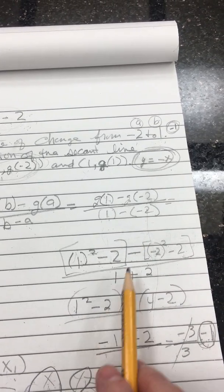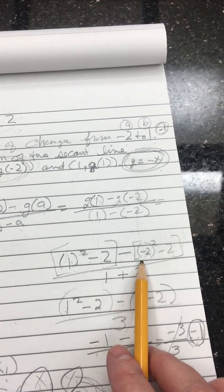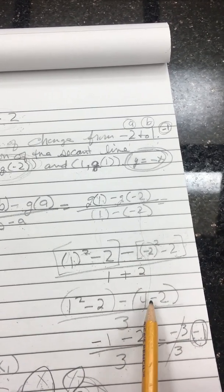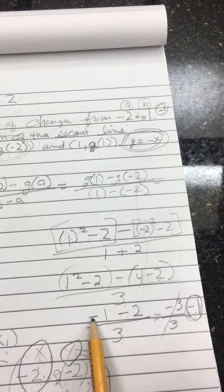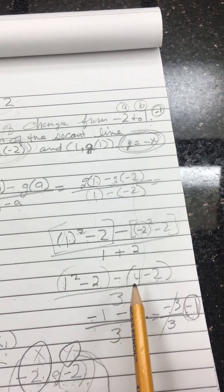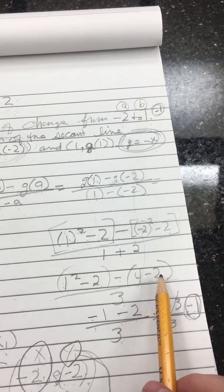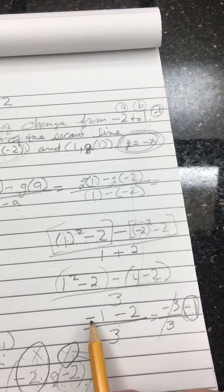So you end up with 1 squared minus 2, bring down your minus sign. A negative 2 squared is a positive 4 minus 2. So 1 squared minus 2 is a negative 1 minus 4 minus 2 is a positive 2.